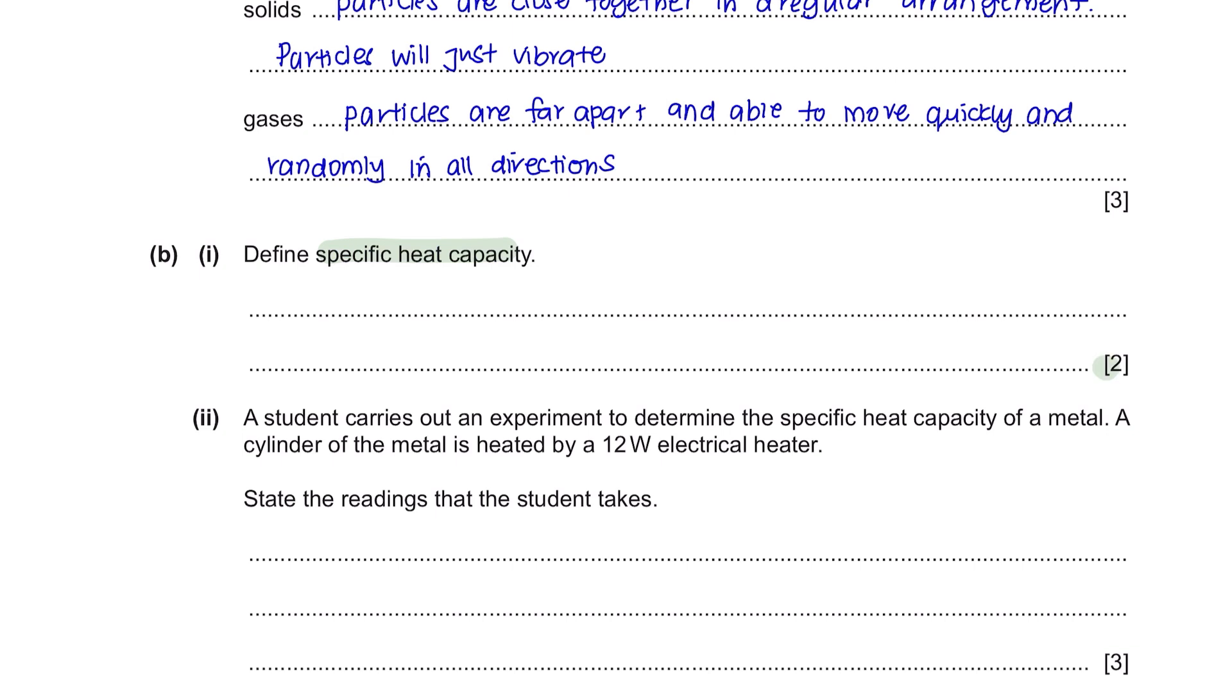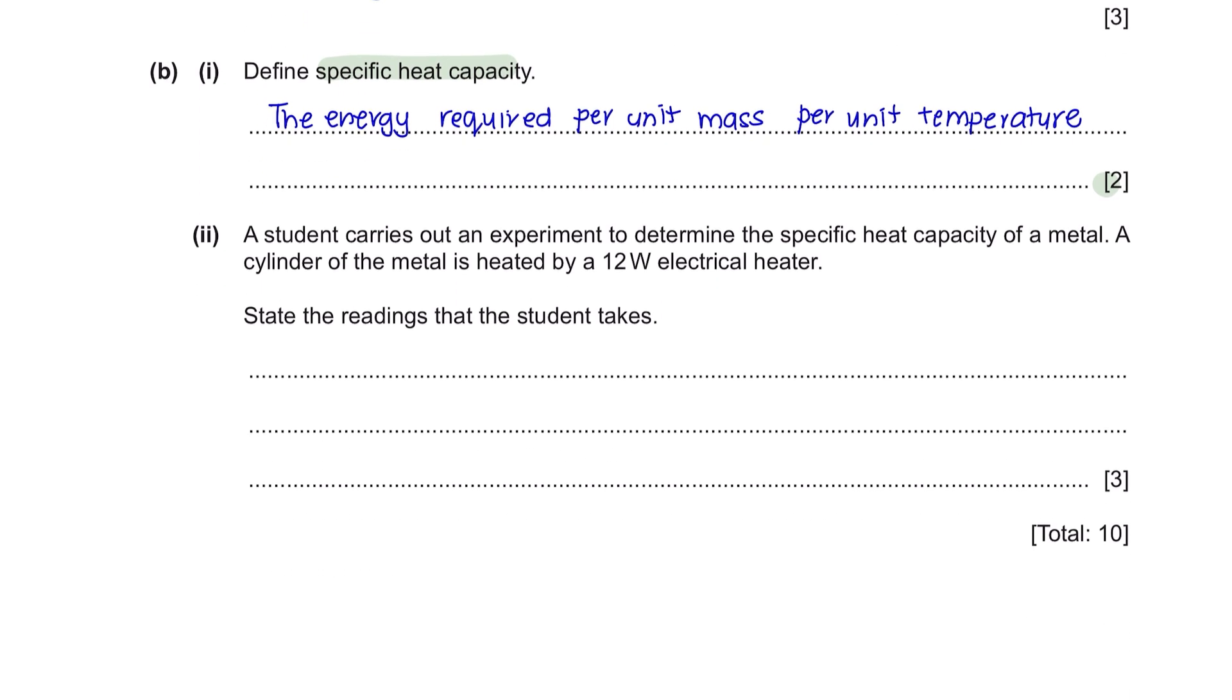Specific heat capacity is defined as the energy required per unit mass where you would get one mark and per unit temperature the second mark. Part 2. A student carries out an experiment to determine the specific heat capacity of a metal. A cylinder of the metal is heated by a 12 watt electrical heater. State the readings that the student takes. There is only one formula related to specific heat capacity which is the change of energy equals mass multiplied by specific heat capacity multiplied by the change of temperature. And in order to obtain the energy, we can use power multiplied by time. So the readings that the student should be taking would be time, mass and theta here which is the difference of the final temperature and initial temperature.